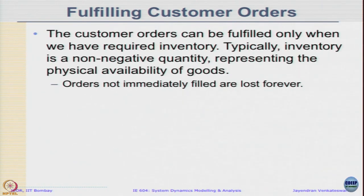Fulfilling customer orders: customer orders can be fulfilled only when we have the required inventory. Typically we want inventory to be non-negative — it represents the physical availability of goods. Orders not immediately fulfilled are lost forever. For example, if you go to a retail shop and what you want is not there, you go to the next shop. Especially at a small retail setting or for a time-sensitive item, that order is pretty much lost for the retailer.